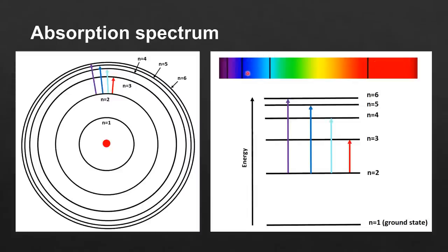The colored arrows on the diagram correspond to the colors that are missing from the absorption spectrum. Electrons transition between energy levels when they absorb discrete amounts of energy. Starting with the red arrow, the electron transitions from n equals 2 to n equals 3, and the energy absorbed corresponds to the wavelength of red light. For the blue arrow, the electron transitions from n equals 2 to n equals 5, and the energy absorbed corresponds to the wavelength of blue light. In summary, the black lines on the absorption spectrum result from electron transitions from n equals 2 to n equals 3, 4, 5, or 6, where the absorbed energy corresponds to wavelengths of visible light.